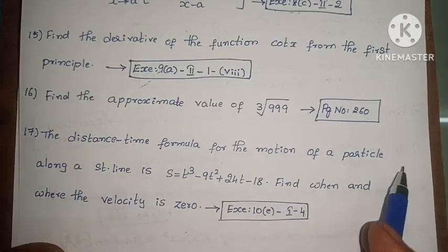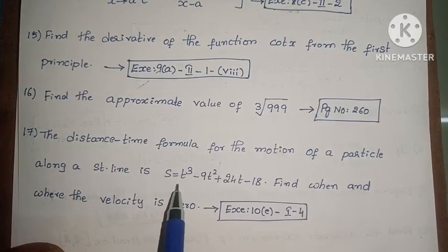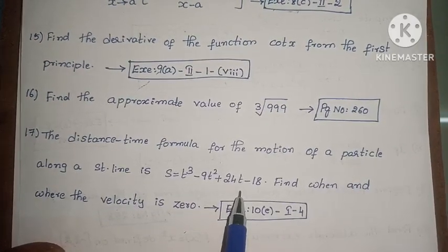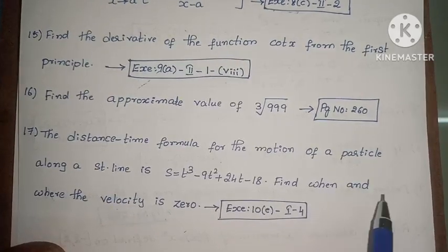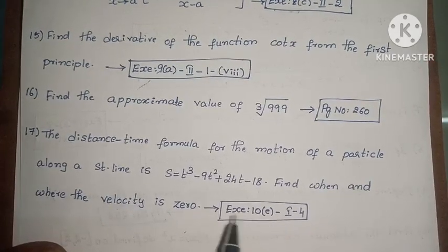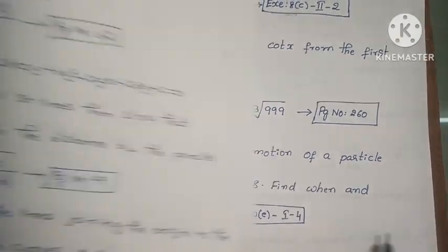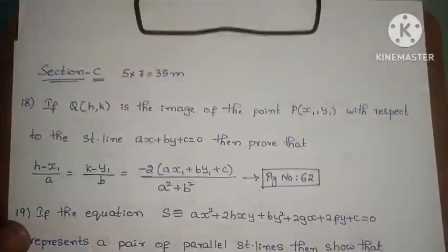Next, the distance-time formula for the motion of a particle along a straight line is s equals t cubed minus 9t squared plus 24t minus 18. Find when and where the velocity is 0. Exercise 10e, first roman law, fourth one. Next, Section C.